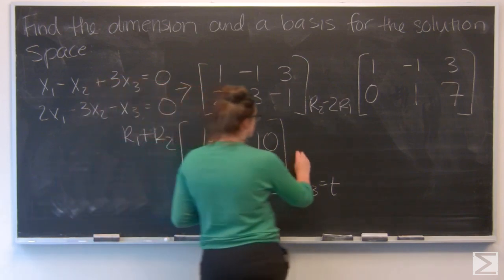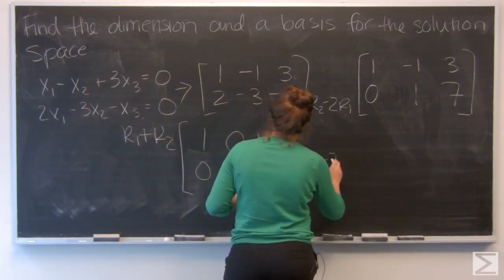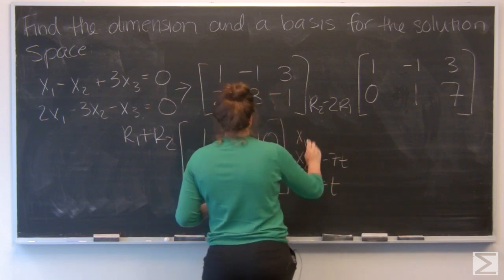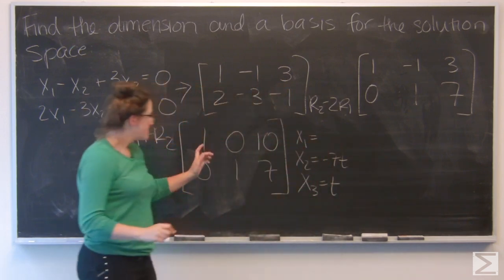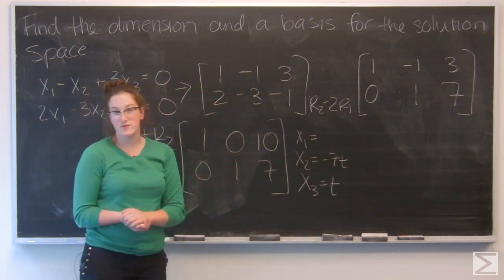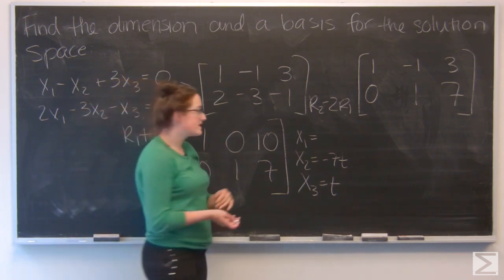For x1, x1 plus 10t equals zero. So x1 equals negative 10t.